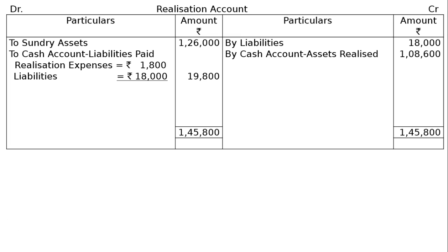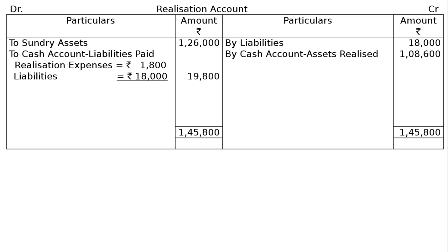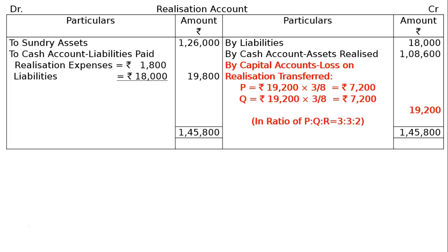Totalling the debit side gives Rs. 1,45,800. Taking it to the credit side to find the balance: by capital accounts — realization loss transferred in the ratio of P to Q to R = 3:3:2. P's share: Rs. 19,200 × 3/8 = Rs. 7,200. Q's share is the same, Rs. 7,200. R's share: Rs. 19,200 × 2/8 = Rs. 4,800.